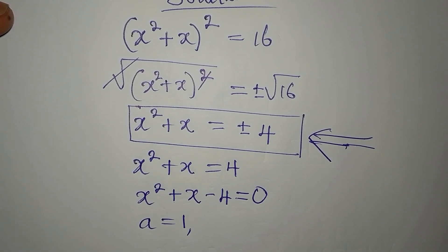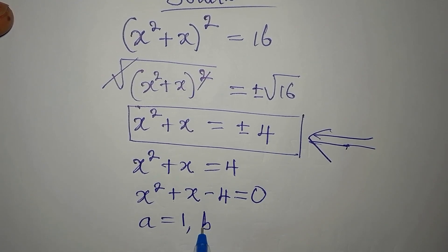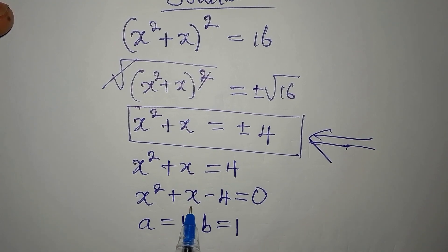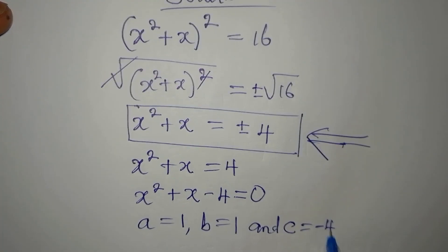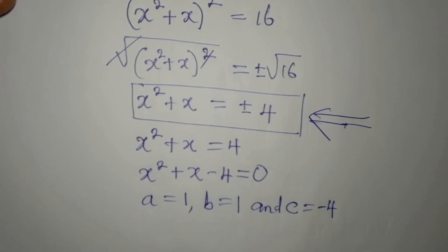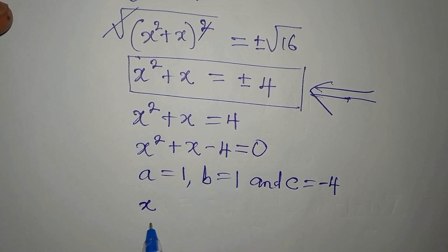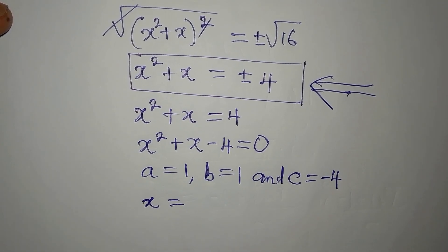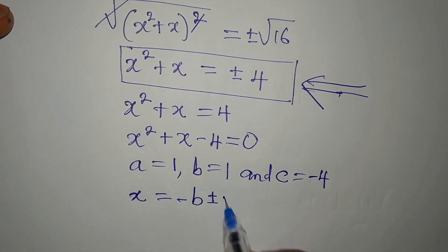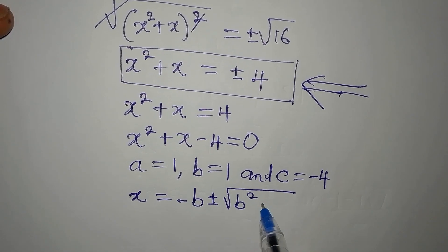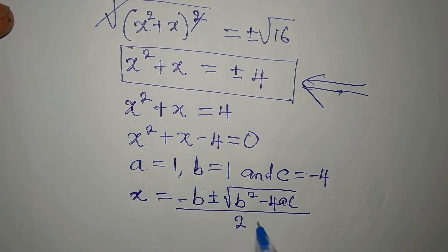a is 1. I believe everybody knows that a is a coefficient of x squared. Then our b is also 1, the coefficient of x. And then what is our c? c is minus 4, the constant. And then the quadratic general formula is x equals minus b plus or minus the square root of b squared minus 4ac all over 2a.